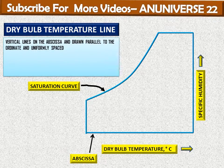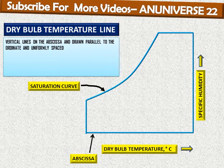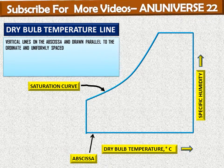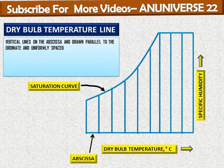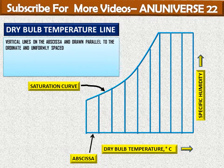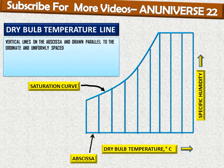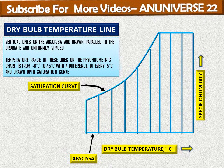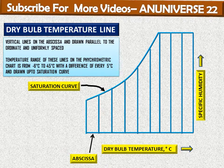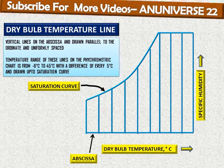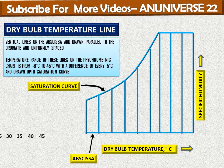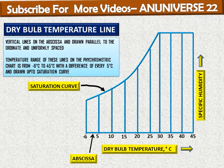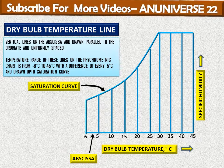Dry bulb temperature lines are drawn on the abscissa, parallel to the ordinate, and these are uniformly spaced — vertical lines equally spaced between each other. The temperature range of these lines on the psychrometric chart is from minus 6 degrees to 45 degrees, with a difference of every 5 degrees, drawn up to the saturation curve.